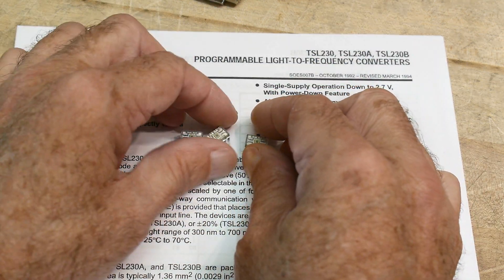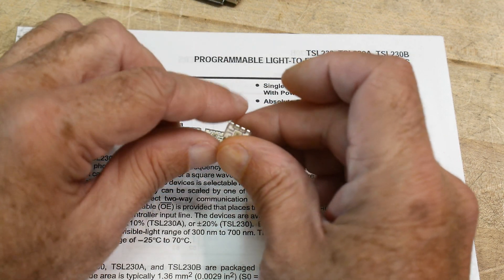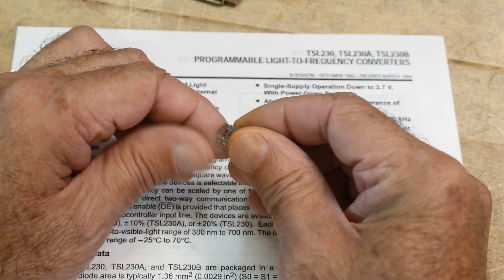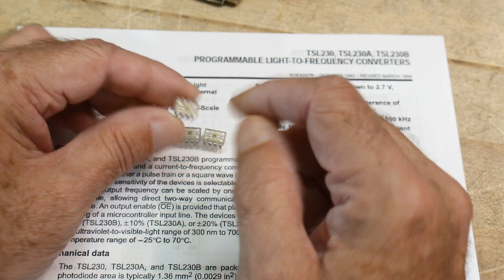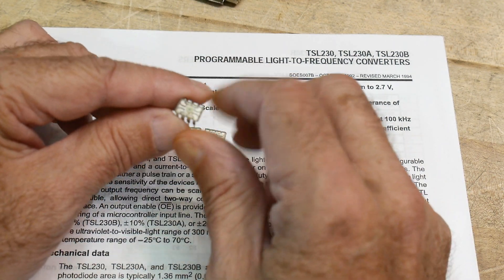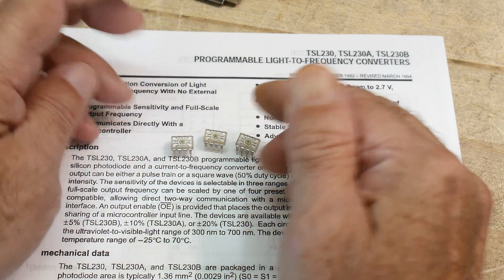TI had a series of chips that were in these clear packages. These are clear encapsulation, they're not black chips, they're clear chips. That's because they have light sensors in them and they had several of these chips. I don't remember what they all did.